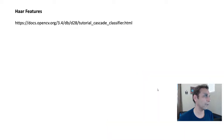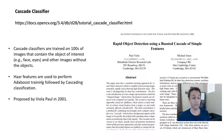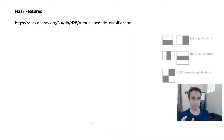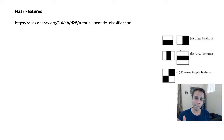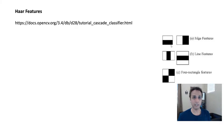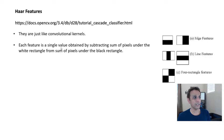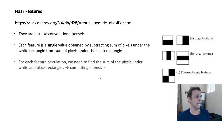Now, what are Haar features? These are very similar to convolutional kernels — like a Gaussian kernel with a peak in the center that tapers off. Each feature is a single value obtained by subtracting the sum of pixels under the white rectangle from the sum of pixels under the black rectangle. You can have different shapes: line features, edge features, and four-rectangle features. For each feature calculation, you need to find the sum of pixels under white and black rectangles.